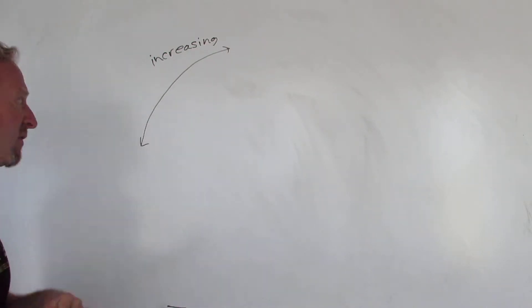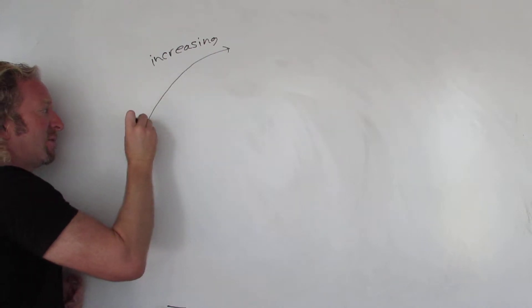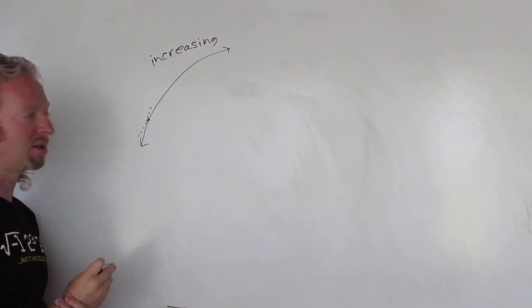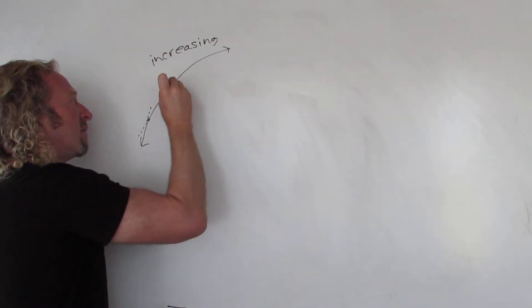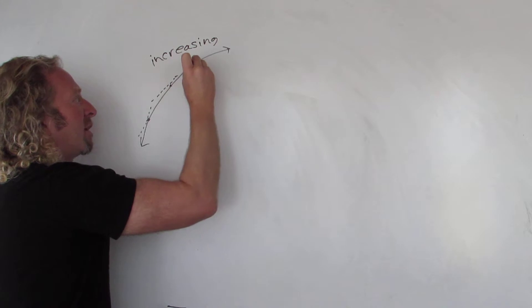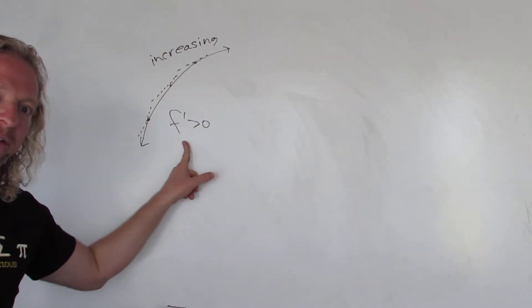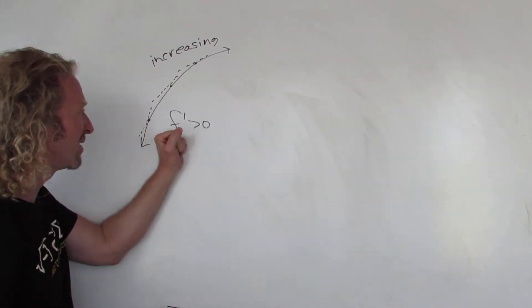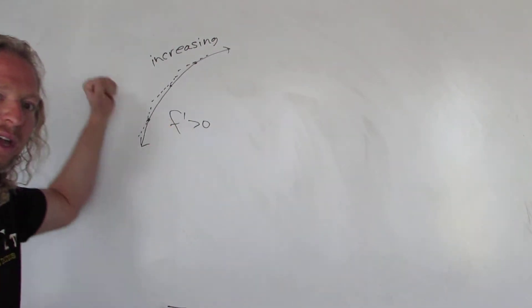If you look at the derivative of this function — the derivative is the slope of the tangent line. So you pick any point on this graph and look at the slope of the tangent line. That tangent line has a positive slope. Pick another point, you have a positive slope. Pick another point, you have a positive slope. So whenever a function is increasing, the first derivative is positive. Positive first derivative, increasing function.